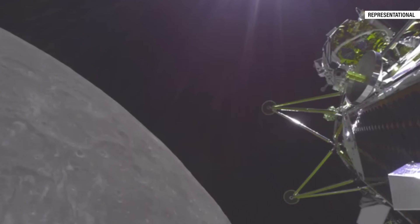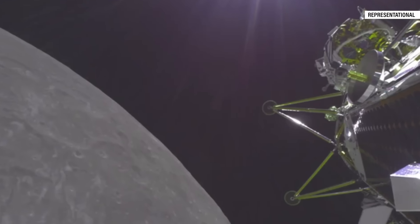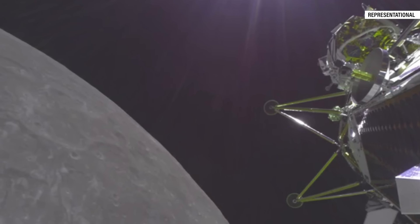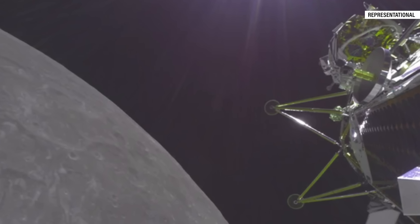Landers falling on the moon after or during landing has been a concern for many space agencies. In fact, this year, the US-based Intuitive Machines' second attempt at landing on the moon turned into a disappointment after their Athena spacecraft tipped over on its side again after facing a similar fate in 2024.